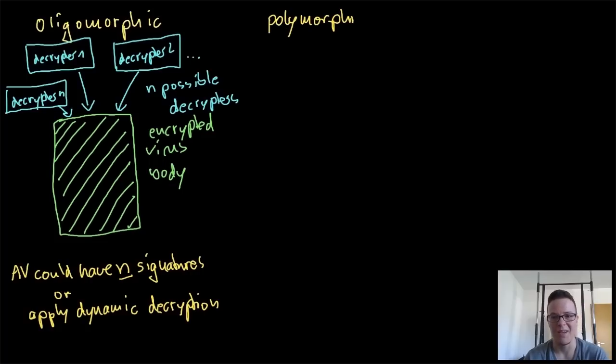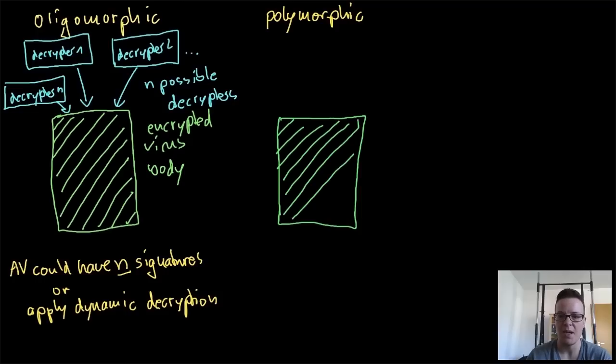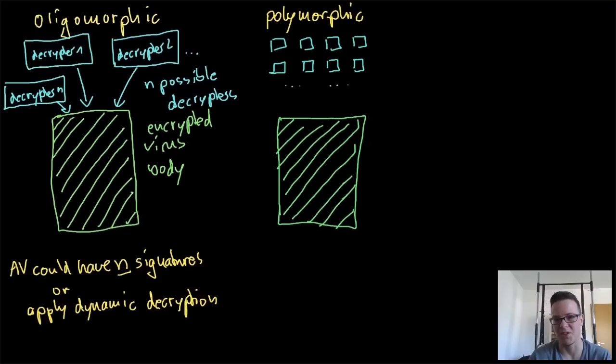The next more advanced stage is the polymorphic virus. With the polymorphic virus, you also have an encrypted virus body, but the possibilities for the decryptor are so high you cannot apply pattern signatures anymore.